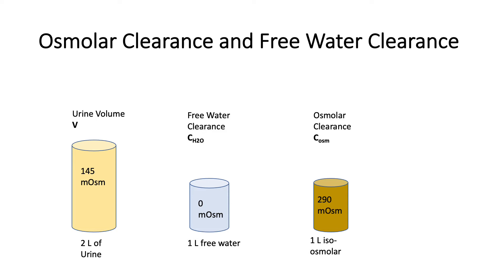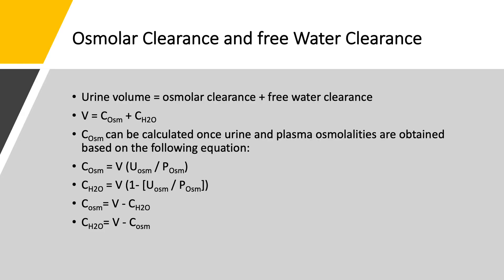Let's call urine volume V, the free water portion free water clearance CH2O — which is a volume — and the isoosmolar portion osmolar clearance, or C-osm. Therefore, urine volume equals CH2O plus C-osm. Both free water clearance and osmolar clearance are volumes. To calculate C-osm, we divide urine osmolality by plasma osmolality and multiply by V. This gives us osmolar clearance.